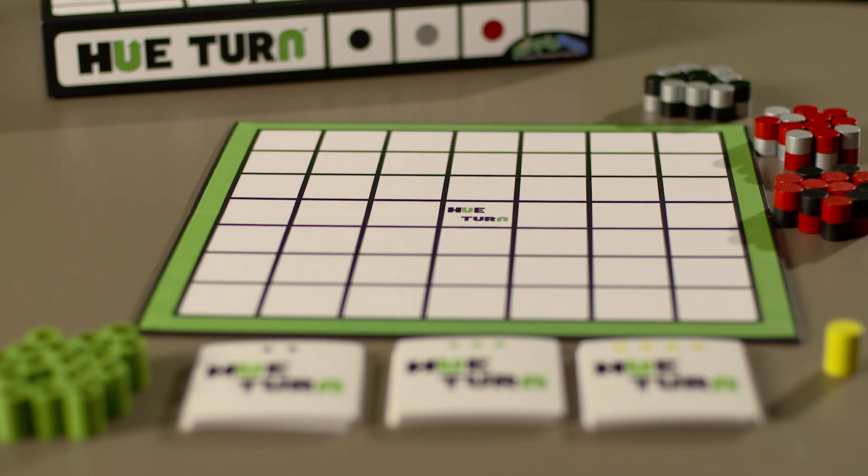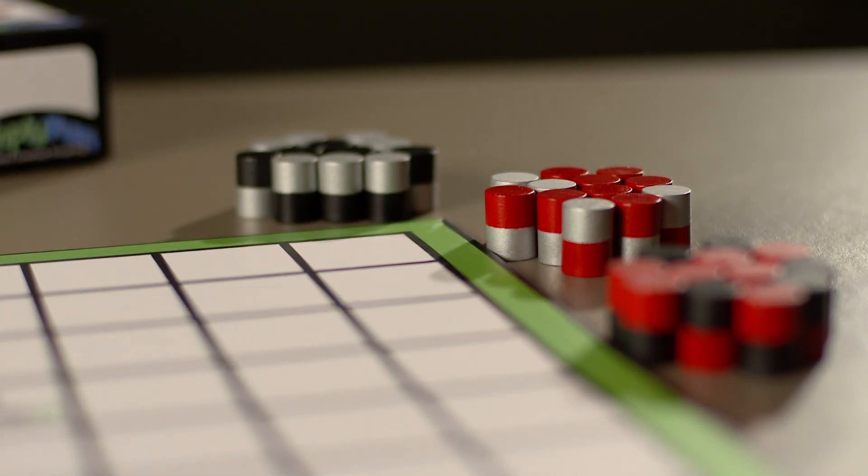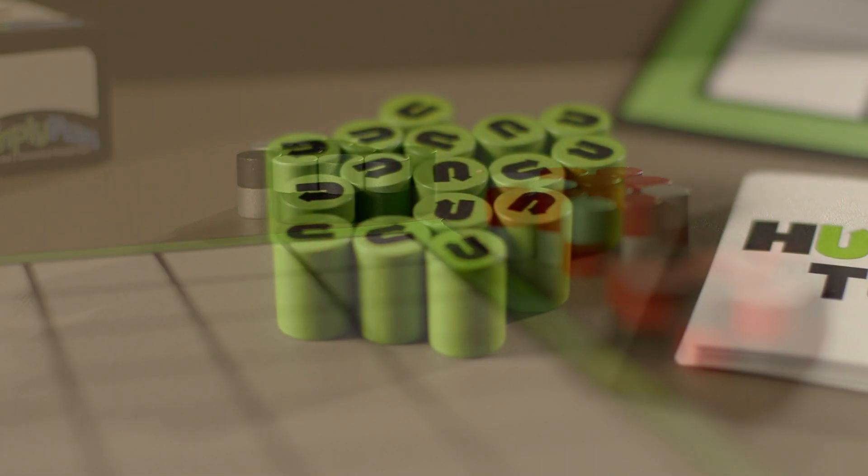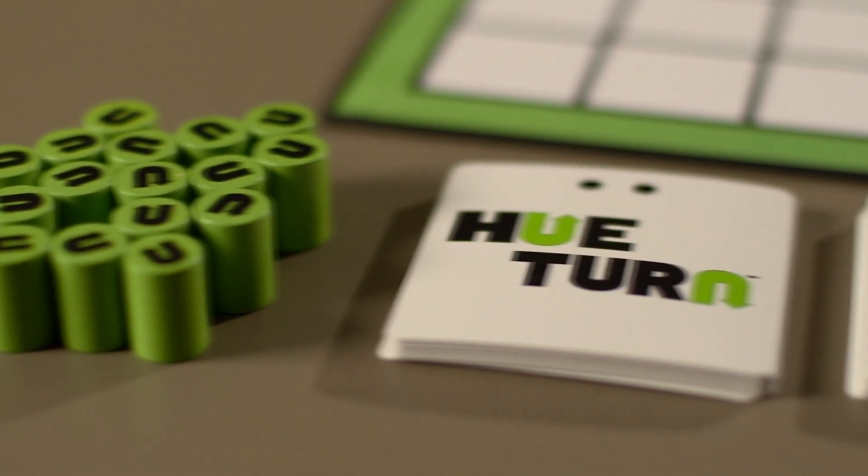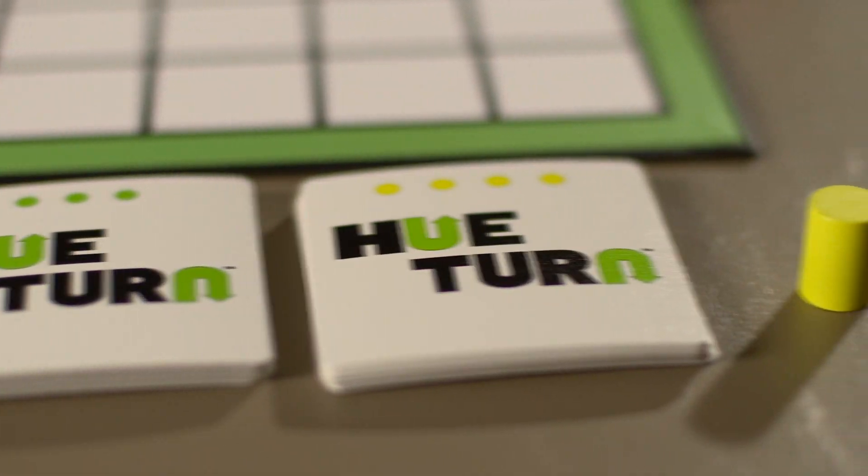The game contains a board with 49 spaces, three different combinations of two color pegs - black-red, red-silver, and silver-black. There are 16 green Hu-Turn pegs and 54 pattern cards in three difficulties, plus a yellow wild starter peg.